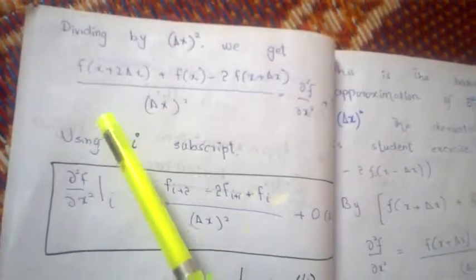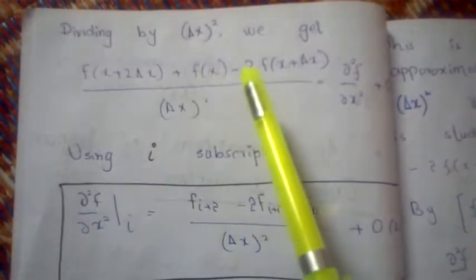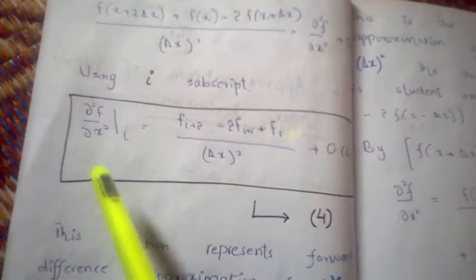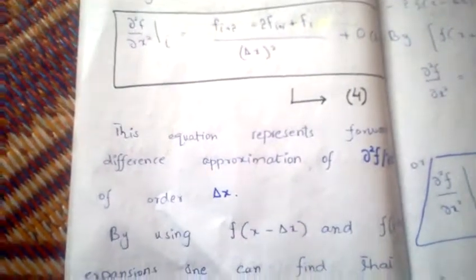This gives ∂²f/∂x² plus O(Δx), where Δx appears as a common factor in all remaining terms. Using subscript i notation: f(x + 2Δx) becomes f_{i+2}, f(x) becomes f_i, and f(x + Δx) becomes f_{i+1}. So the forward difference approximation of ∂²f/∂x² is f_{i+2} − 2f_{i+1} + f_i all divided by Δx², and its order is O(Δx).